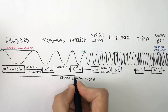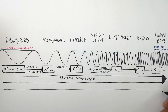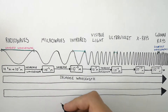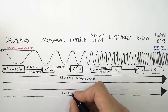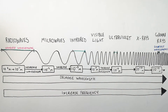As you decrease the wavelength, you're going to increase the frequency. So as you decrease the wavelength, you increase the frequency. Radio waves have the lowest frequency, and gamma rays have got the highest frequency.